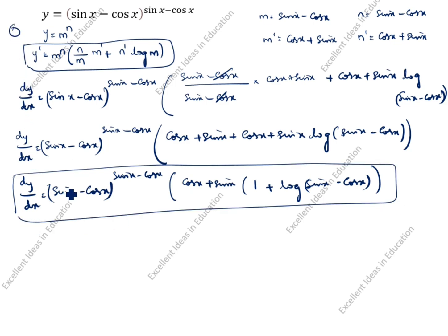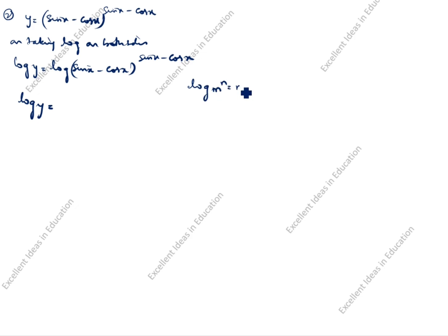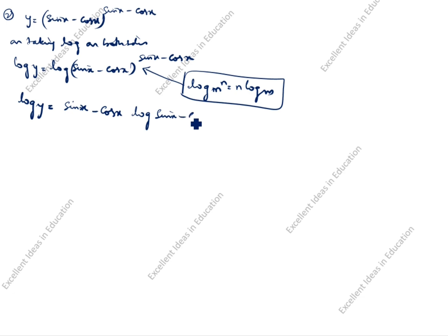This is the first method. We will see the second method. y is equal to (sin x minus cos x) to the power (sin x minus cos x). Second method: how we will do this one — on taking log on both sides. Log y is equal to log of (sin x minus cos x) to the power (sin x minus cos x). Using the formula log of m power n equals n log m, we write: log y equals (sin x minus cos x) times log of (sin x minus cos x).